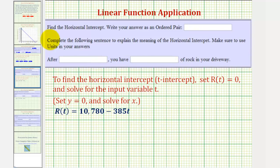Next, we're asked to find the horizontal intercept, again as an ordered pair, and then to express the meaning of the horizontal intercept. To find the horizontal intercept, or in this case the t-intercept, we set the function value, or R(t), equal to zero and solve for the input variable t.